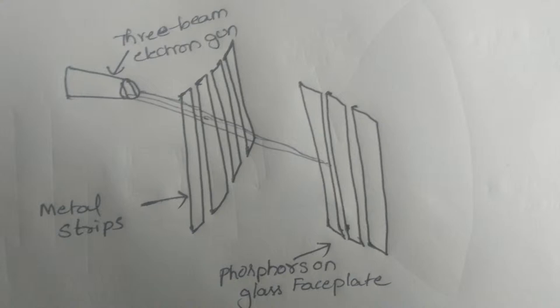From the top of the screen to the bottom of the screen, we arrange the vertical stripes. In this CRT, we have the electron beams side by side. There is a triangular form, side by side.